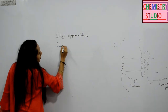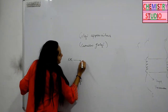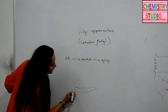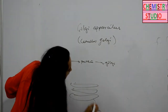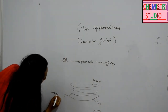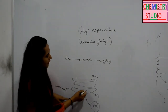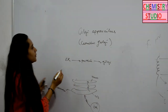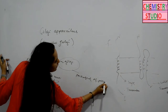Golgi apparatus was discovered by Camillo Golgi. The protein being synthesized by the ER will move to the Golgi. The Golgi has a cis face and a trans face. The face facing the ER is the cis face, and the other — away from it — is the trans face. This disc-type structure is basically your cisternae. The protein moves from the cis face to the medial and then to the trans face in vesicles. The main function of Golgi is the packaging of proteins.